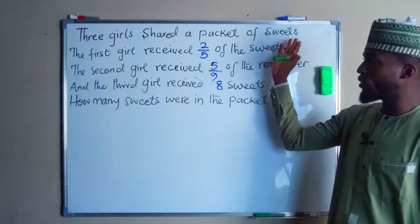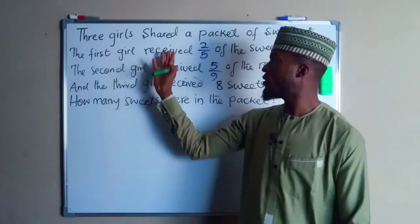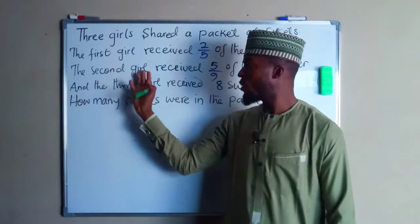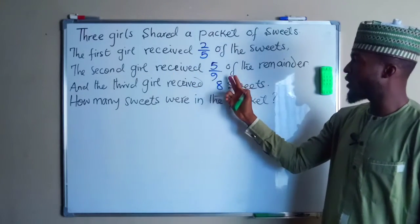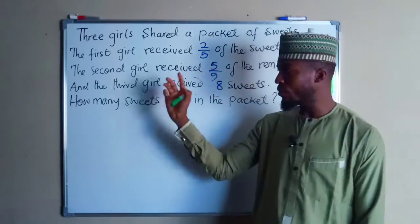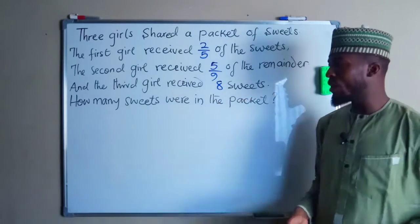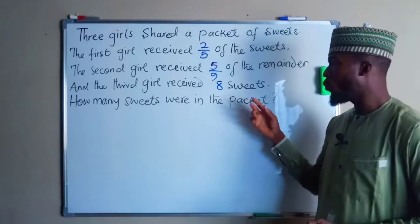Three girls shared a packet of sweets. The first girl received 2/5 of the sweets. The second girl received 5/9 of the remainder, and the third girl received 8 sweets. So collectively, how many sweets were in the packet?